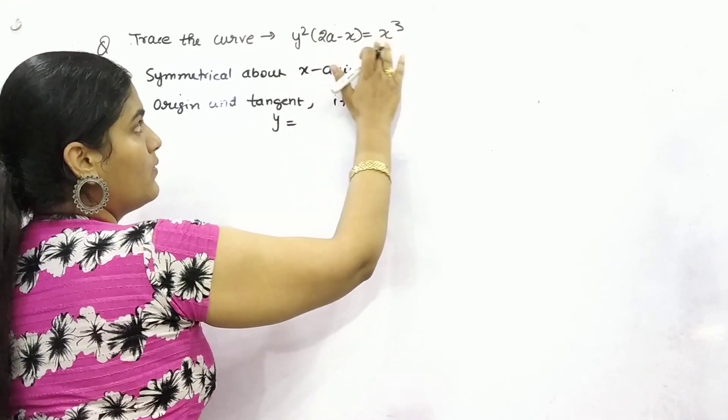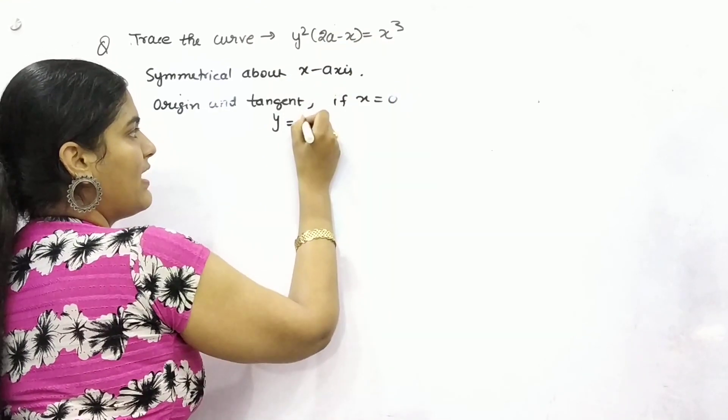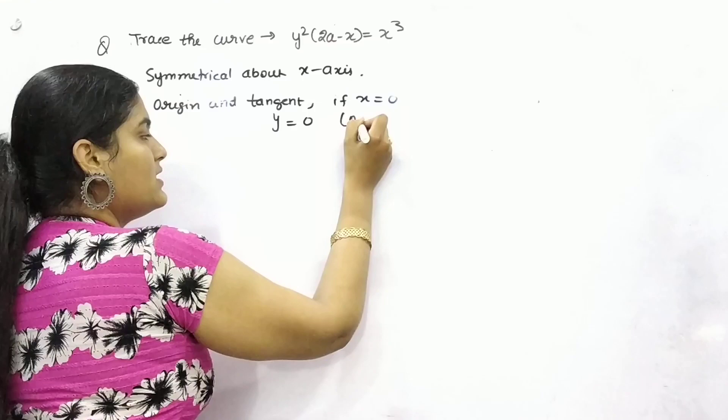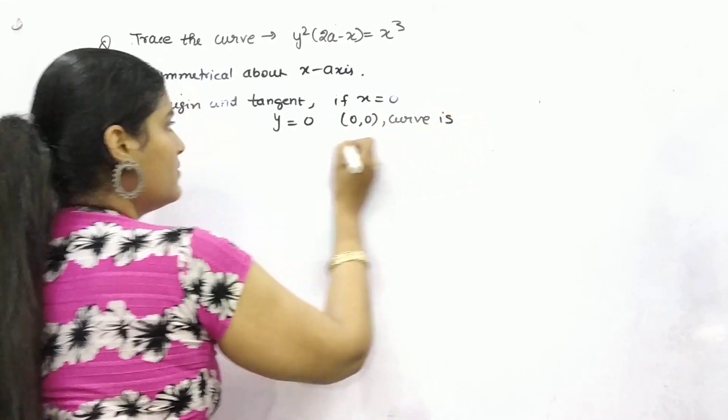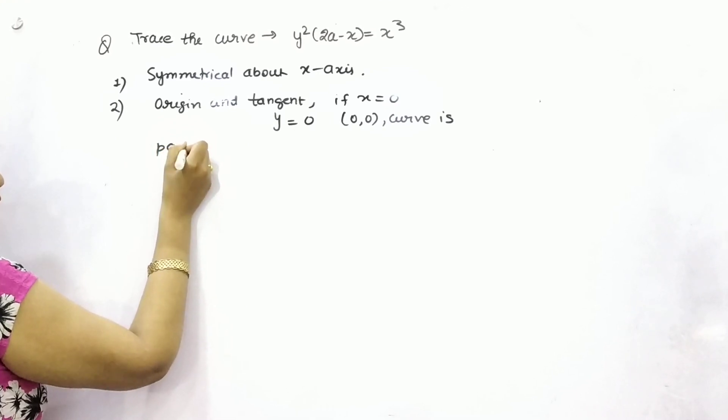If x is 0, here is 0, 0 by 2a, y will also be 0. So (0,0) - that means curve is passing through origin.